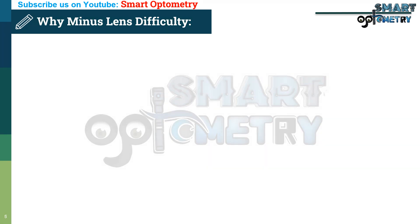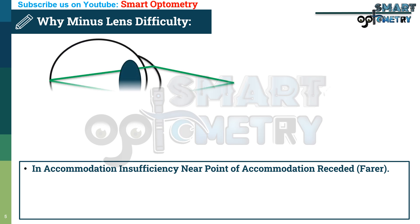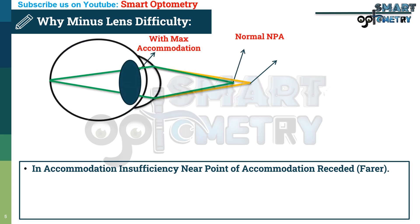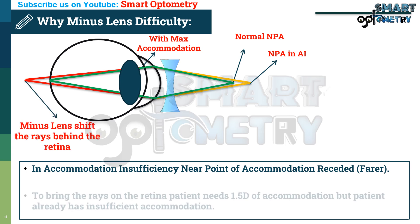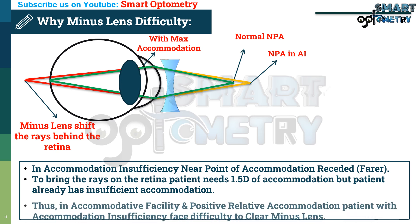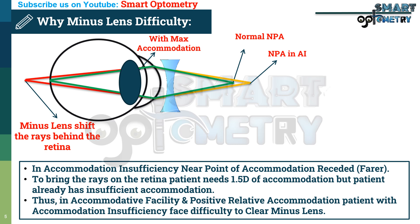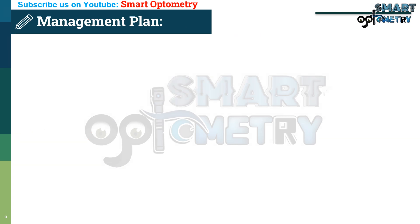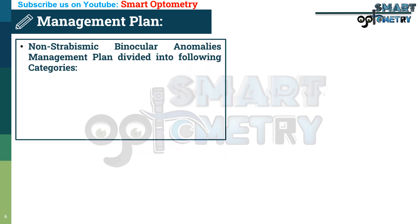Why does accommodation insufficiency cause difficulty clearing the minus lens? In accommodation insufficiency, the near point of accommodation is receded. When a −1.5 diopter lens is introduced, it shifts rays behind the retina. To bring rays onto the retina, the patient needs 1.5 diopters of accommodation, but the patient already has insufficient accommodation. So introducing a minus lens may blur the image — thus in accommodative facility and PRA, patients face difficulty clearing the minus lens.